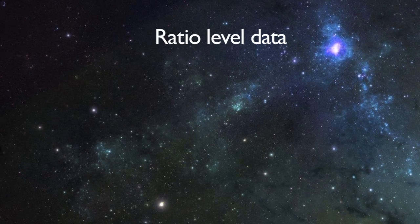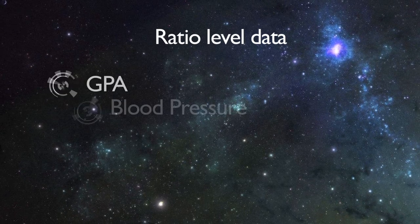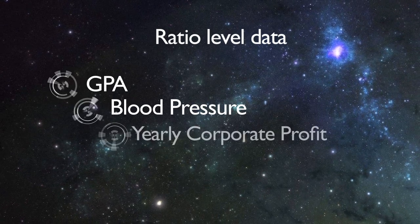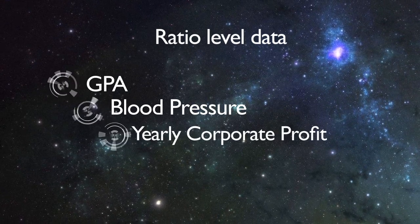Zero in this case is a value that allows us to compare other temperatures. Another type of quantitative data is ratio level data, like measurements of GPA, blood pressure, yearly corporate profits, or electrical charge.